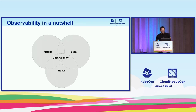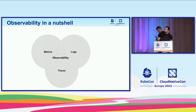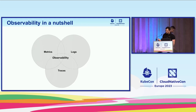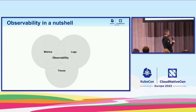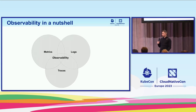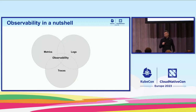So what is observability? Observability is about understanding our applications. We do that by looking at certain data, which are either metrics, logs, and traces. In this tutorial we will try to use all of them on Kubernetes by using the OpenTelemetry technology.